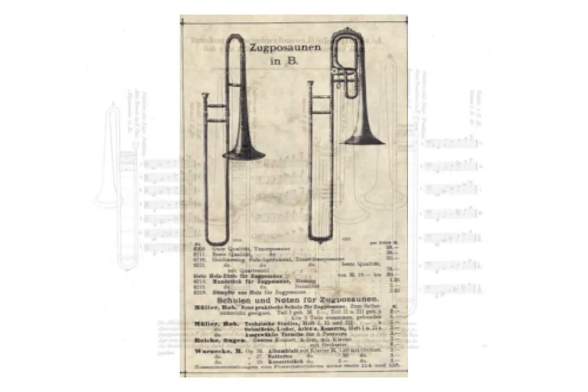The rotary valve for the modern trombone was introduced to the world in the late 1820s. When the valve was invented, the Germans added one valve to the largest of the B-flat trombones. This trombone was known as the tenor-bass trombone. With the additional notes in the low range that the valve offered, this type of trombone later became popular and enduring in orchestras.